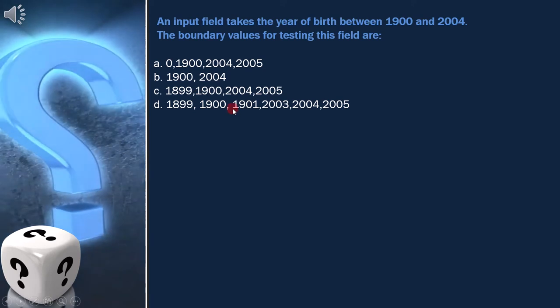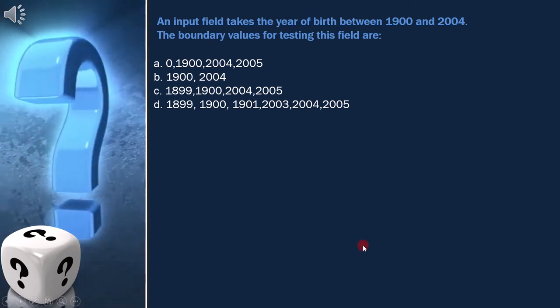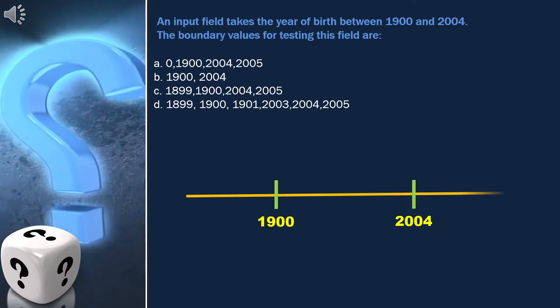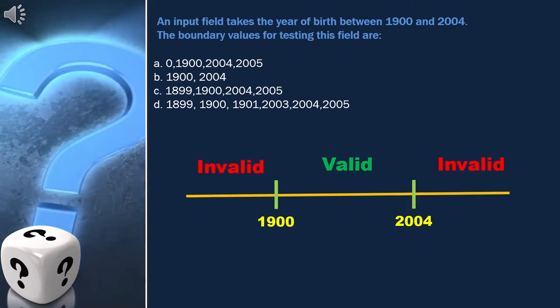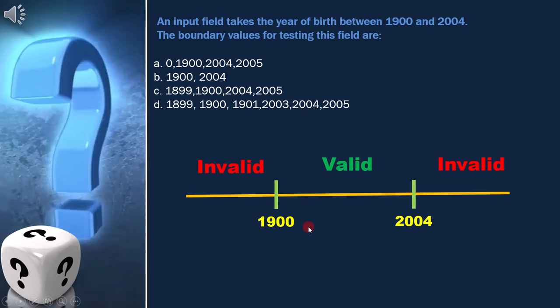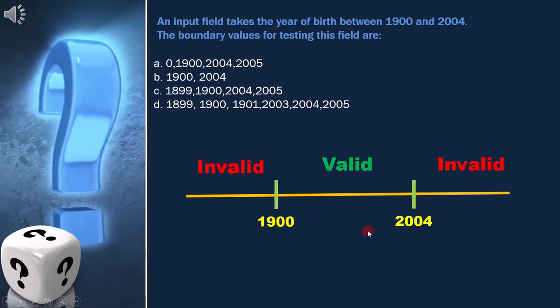To solve this question first we have to draw a boundary value analysis diagram. It's clear from the question that 1900 and 2004 are the boundary values, so this is how the boundary value diagram will look like.